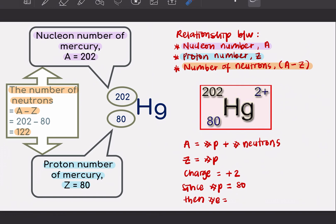Here we have, we are going to see the relationship between nucleon number, proton number, and number of neutrons. So let's say for this element, Hg is actually mercury. Given the A and Z, you can actually find the number of neutrons. How? Because when you have the nucleon number, since A is equal to number of proton plus number of neutrons.